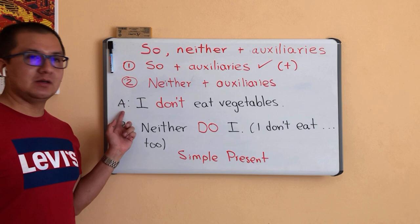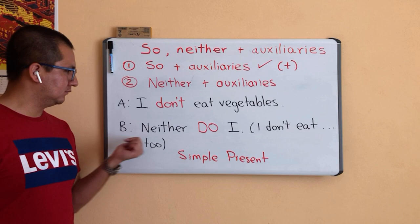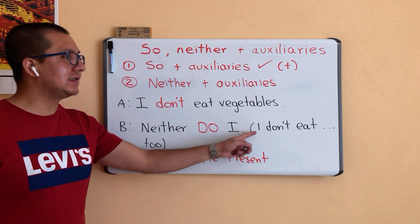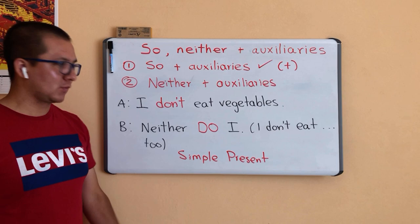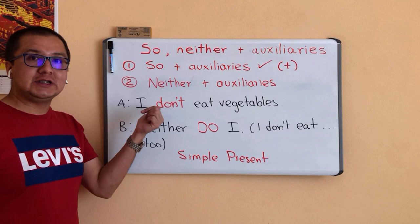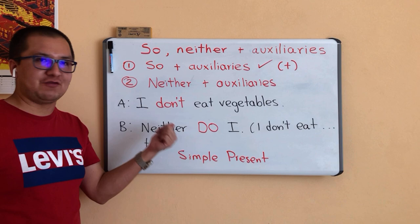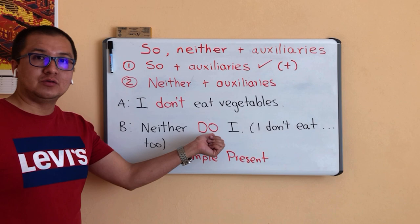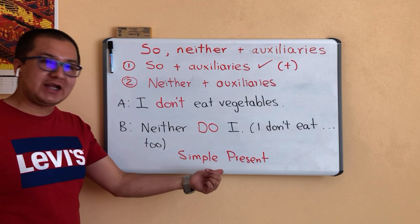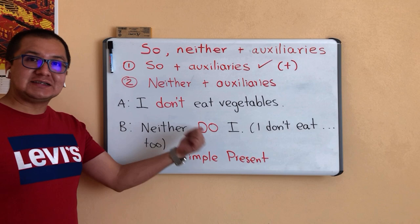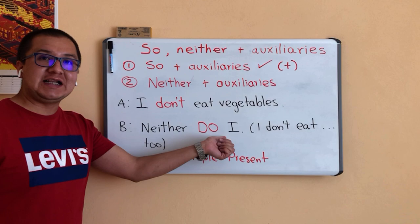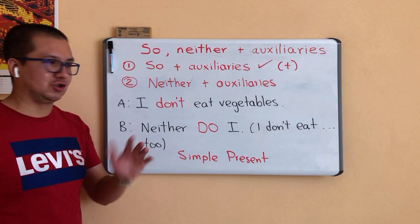Here is an example. Person A says: 'I don't eat vegetables.' Person B replies: 'Neither do I,' meaning: I don't eat vegetables too. Pay attention to the word in red: DON'T — it's a negative sentence. But in the answer, 'Neither do I,' you use the auxiliary DO in the affirmative form. DO is the auxiliary for simple present. When you answer, the auxiliary must always be in the affirmative form.